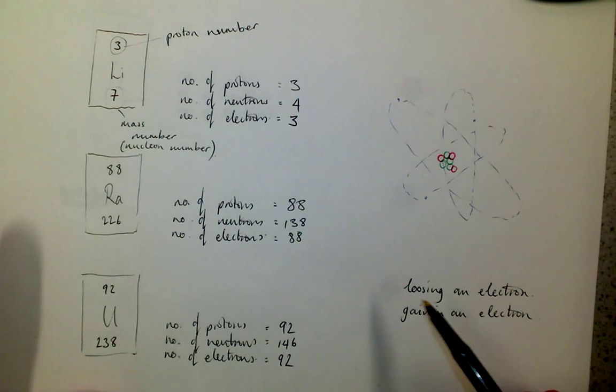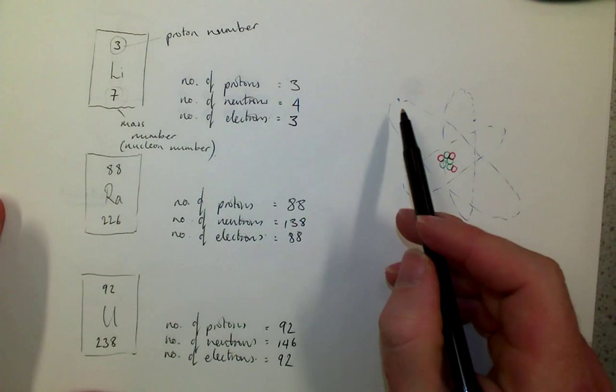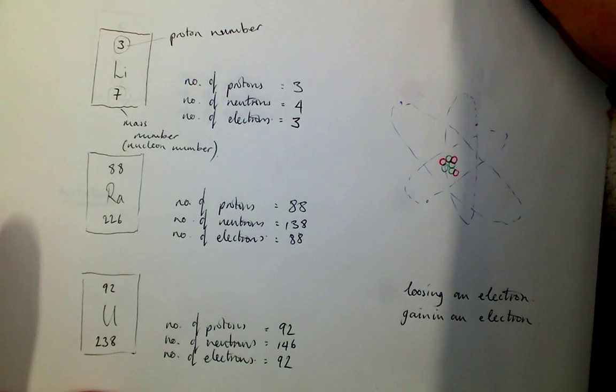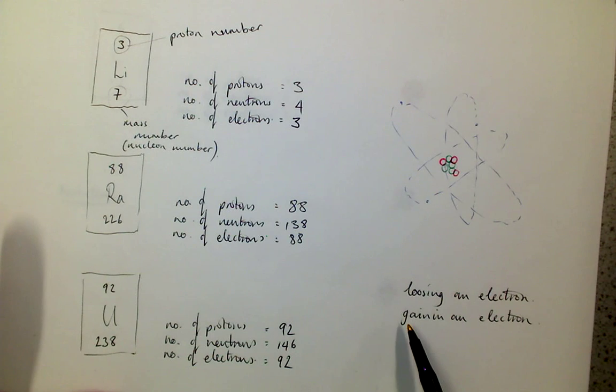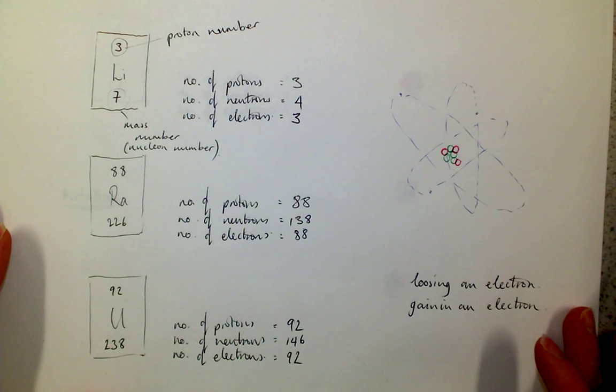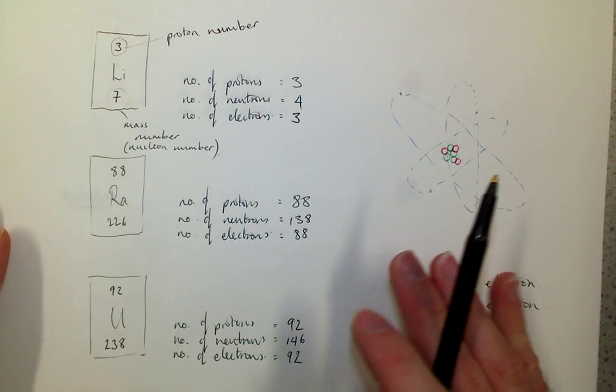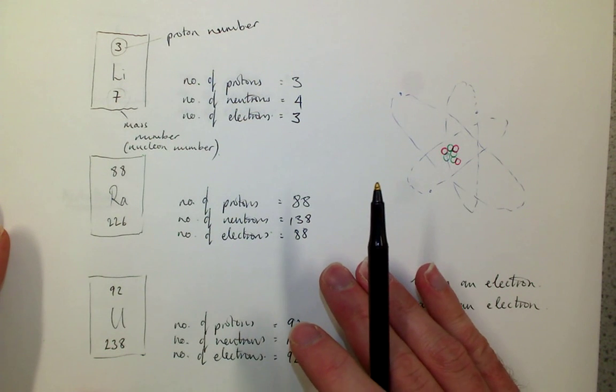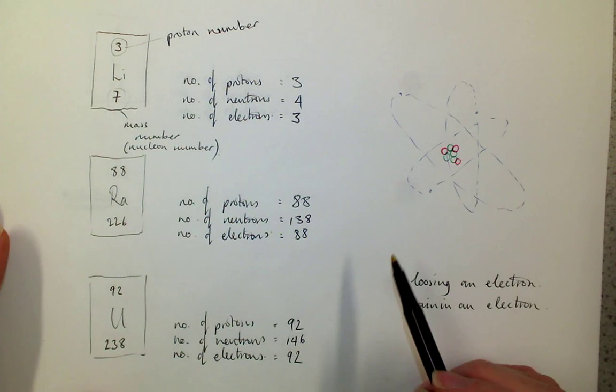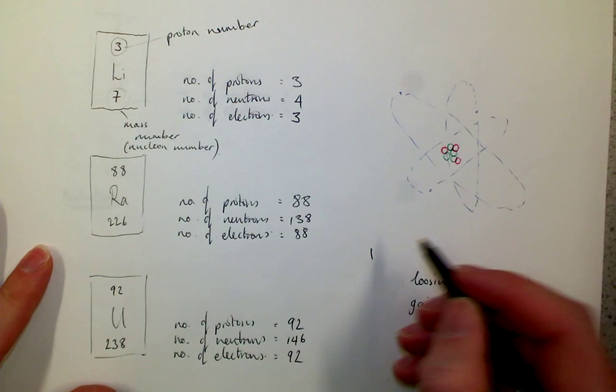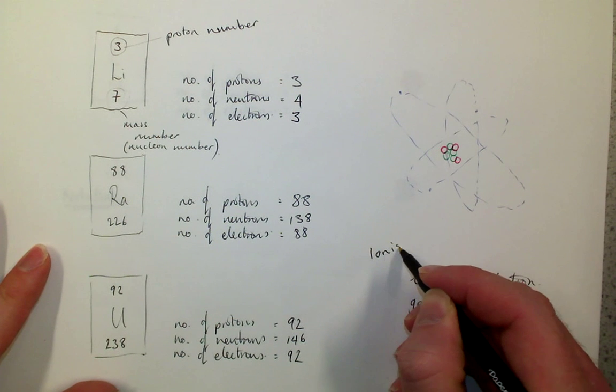Now again, that's something important for chemistry as well as this part of physics. And when any radioactive particle hits an atom, it can do some damage to that atom, and we call that ionization.